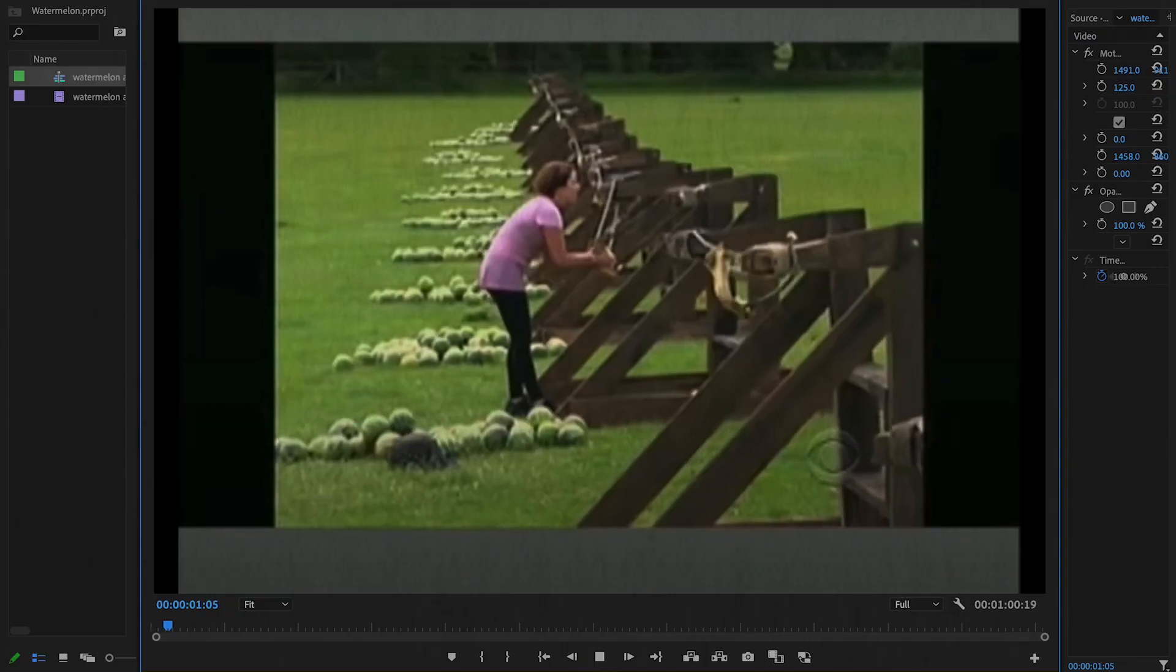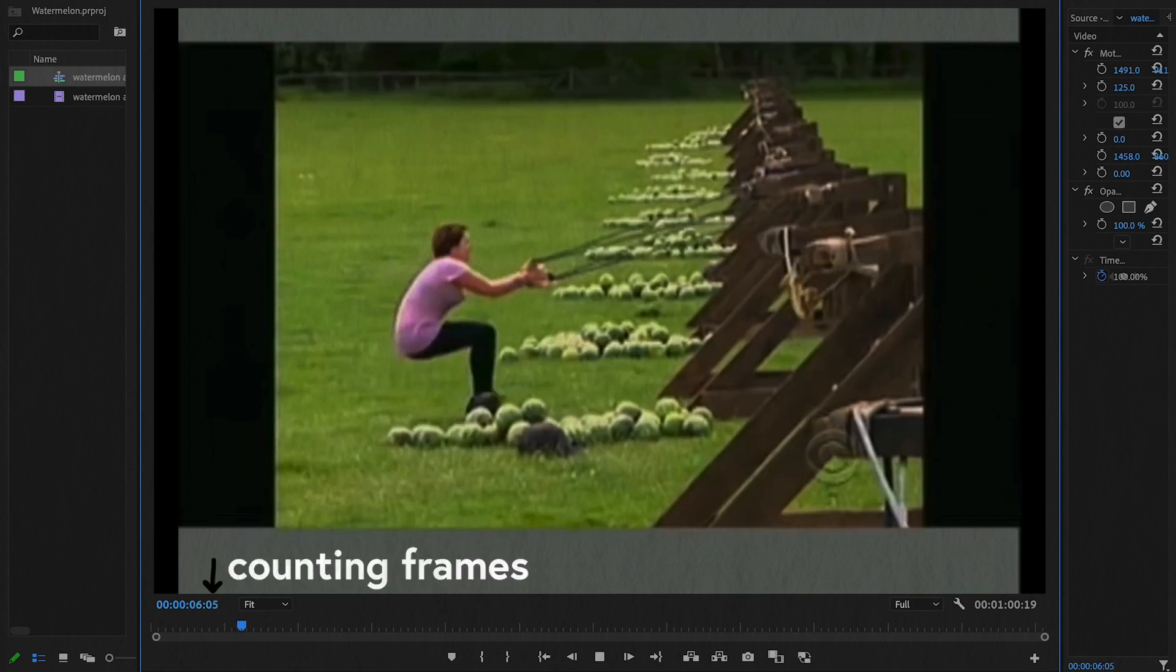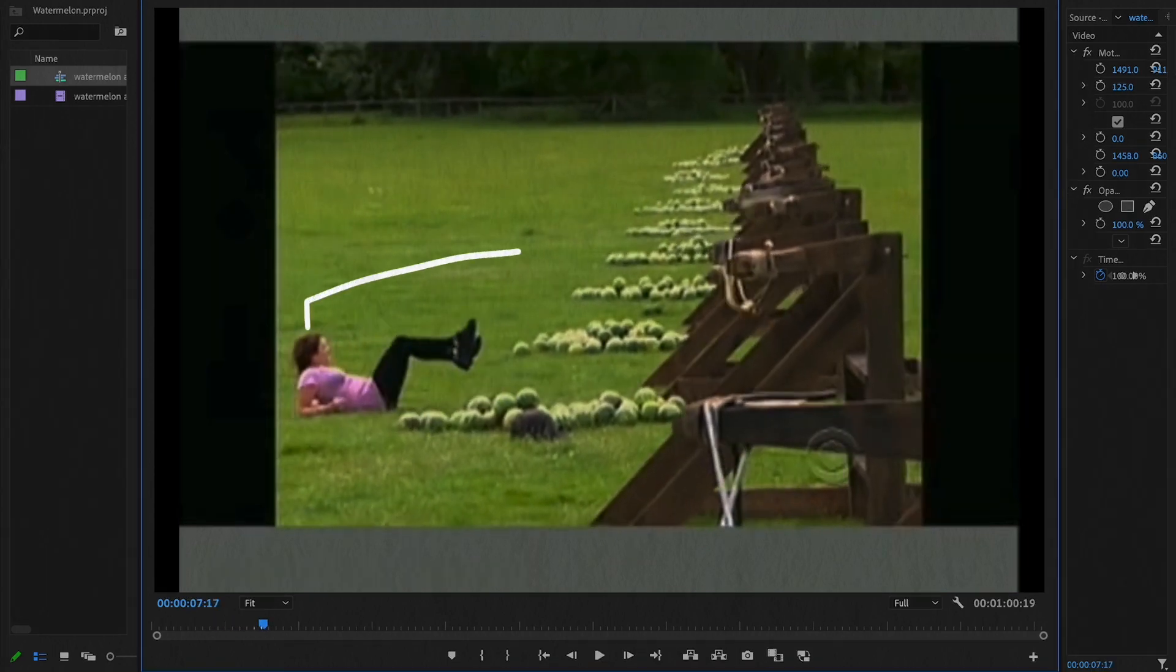From this video footage, we can actually estimate all the things we need to find impact force. This footage was shot at 30 frames per second. I estimated that the distance from her face to the center of the catapult is about 10 feet.